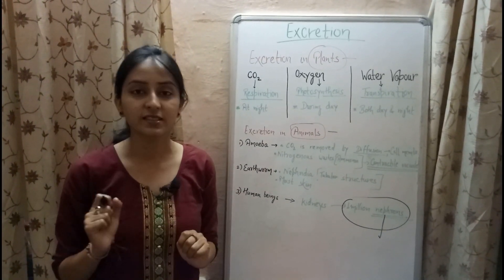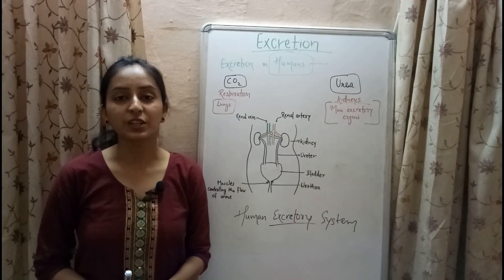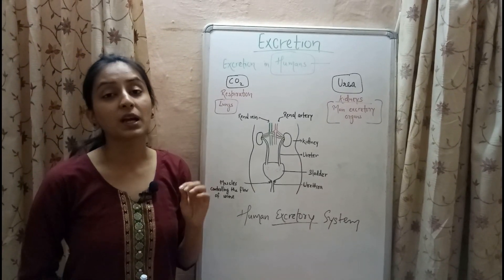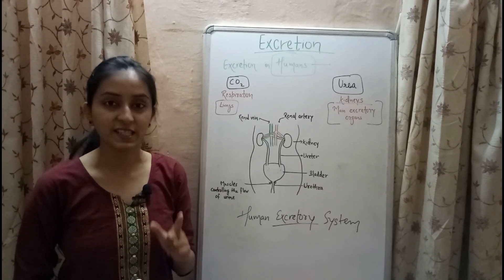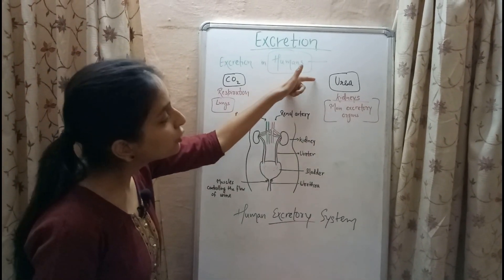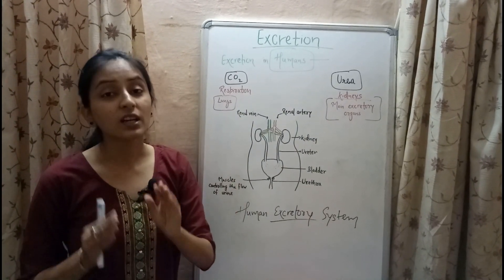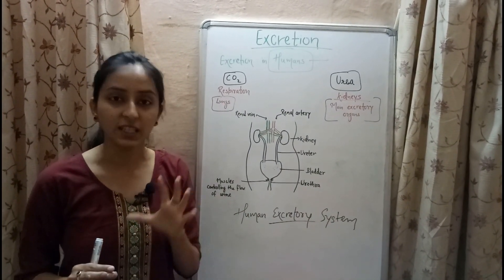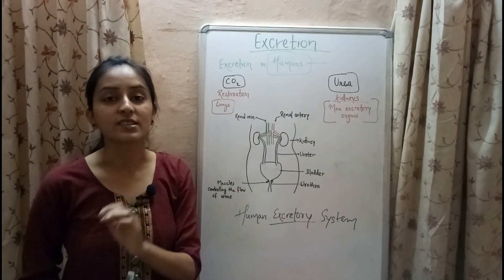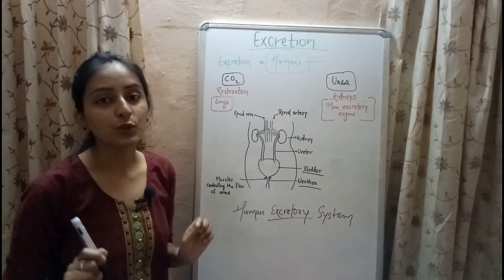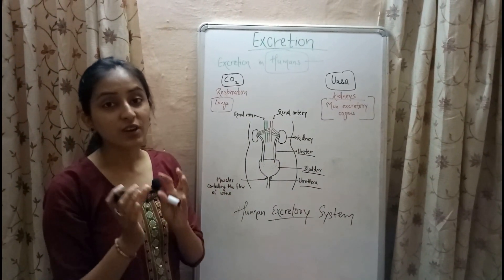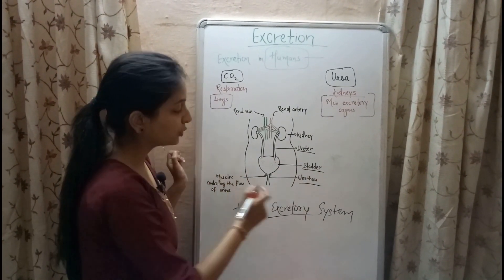The main excretory products produced in human beings are carbon dioxide and urea. Carbon dioxide is excreted by the process of respiration, and lungs are responsible for its excretion. Urea is excreted by the kidneys and is the major excretory product, which is why kidneys are known as the main excretory organs. Besides kidneys, the human excretory system also contains two tubes called ureters, a bag-like structure called the bladder, and a tube called the urethra.